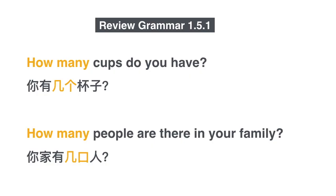Welcome back to ChineseZeroToHero.com. Now let's take a look at a new grammar point. Remember back in grammar 1.5.1 we learned how to say 'how many.' For example, how many cups do you have? 你有几个杯子. How many people are there in your family? 你家有几口人.